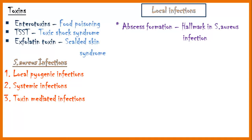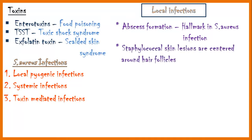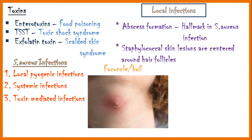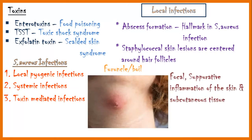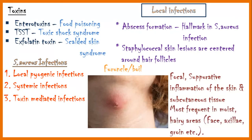Most staphylococcal skin lesions are centered around hair follicles. A furuncle, also known as a boil, is a focal suppurative inflammation of the skin and subcutaneous tissue caused by Staphylococcus aureus. These are more common in hairy, moist areas such as the face, axillary, and groin. A collection of furuncles is known as a carbuncle.